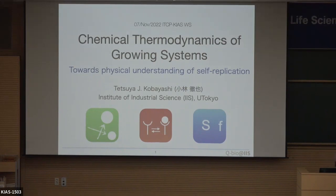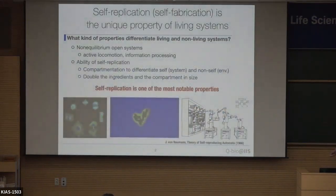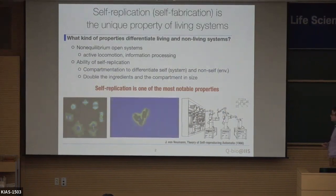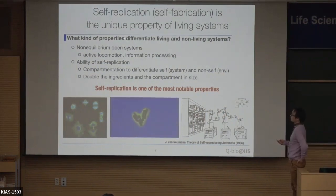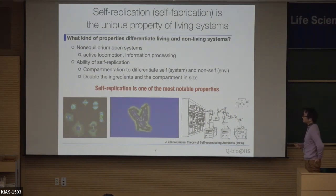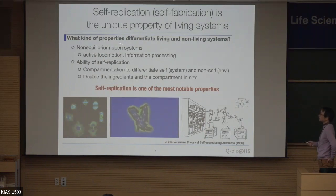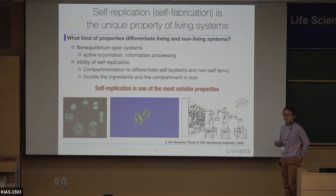Today I'm going to talk about a theoretical attempt to understand self-replication from a physical and chemical viewpoint. As we know, self-replication is the unique property of living systems. One ultimate goal of biophysics is to identify the properties that can differentiate living from non-living systems. We already know that living systems should be non-equilibrium and open systems, which is why we study stochastic thermodynamics and non-equilibrium physics in this school.